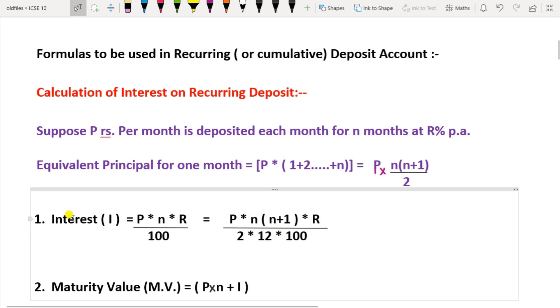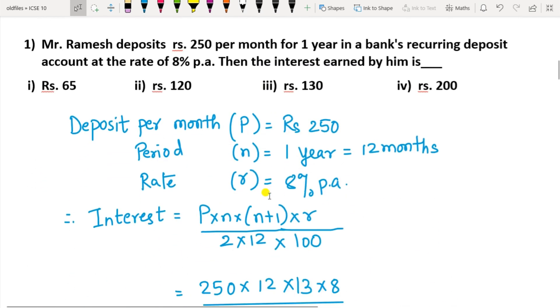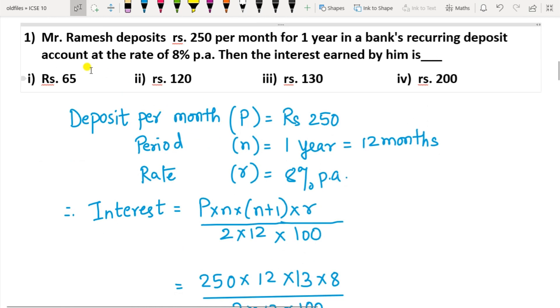So, the formula becomes I = P × n(n+1) × R / (2×12×100). This is the formula to find the interest of recurring deposit account. Then the amount at the end of the time period is called the maturity amount or maturity value (MV). It is calculated by the formula: MV = P×n + I. So, these are some of the formulas. These are the only two formulas that we are going to use in this exercise.